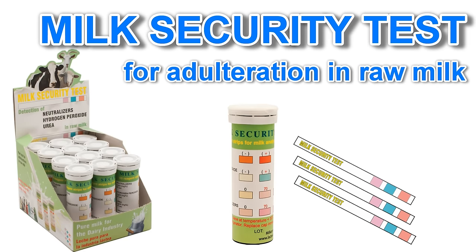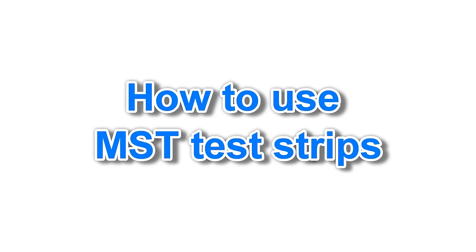Milk security test is a rapid strips test for detection of adulteration in raw milk. In many countries where milk producers are mainly small farmers, adulteration is done for increasing some of the measured parameters in milk and its purchase price.